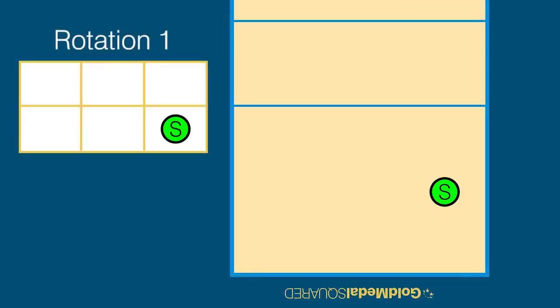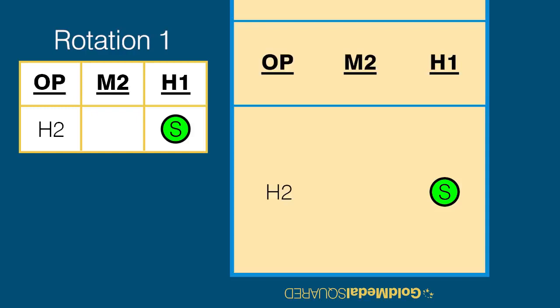In Rotation 1, player positioning is as follows: The setter in Zone 1, followed by the H1, M2, opposite, H2, and M1. The libero replaces the back row middle blocker.